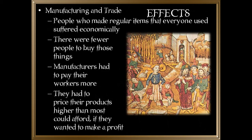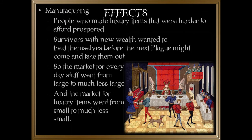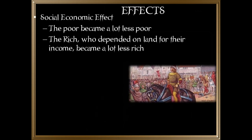In manufacturing and trade, people who made regular everyday items suffered economically — there were fewer people to buy those things, and manufacturers had to pay workers more because labor was scarce, forcing prices higher than most could afford. Those who made luxury items prospered, as survivors with new wealth wanted to treat themselves before the next plague might take them. The market for everyday items shrank while the market for luxury items grew. The poor became a lot less poor, and the rich who depended on land for income became a lot less rich.